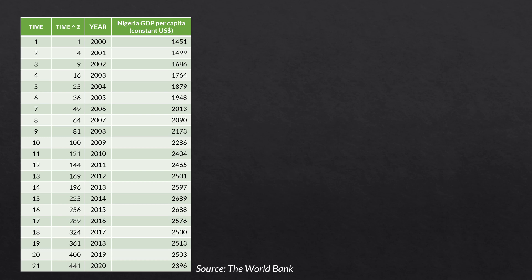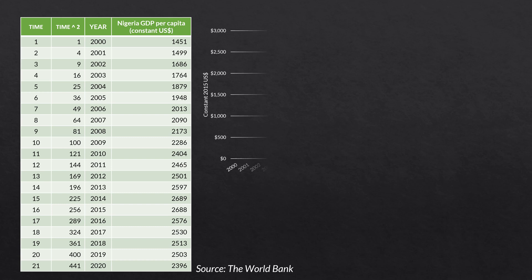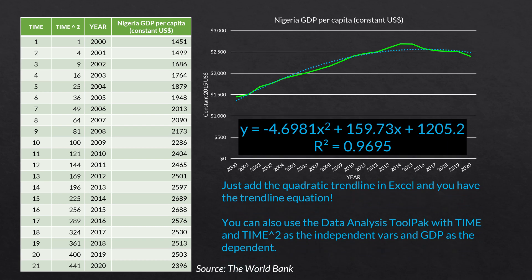An obvious question is how do we structure the data for this quadratic trend projection? In this data on the left, you can see that we have our time period in the first column — 21 time periods. In the second column, we have our time period squared — that is our squared term. Then we have the year, then the actual GDP per capita. When we go into Excel and graph this and superimpose a quadratic model on top of it, Excel gives us the quadratic model colored blue and dotted, along with an equation and R-squared showing how well it fits. So it gives us an equation for our forecasts.